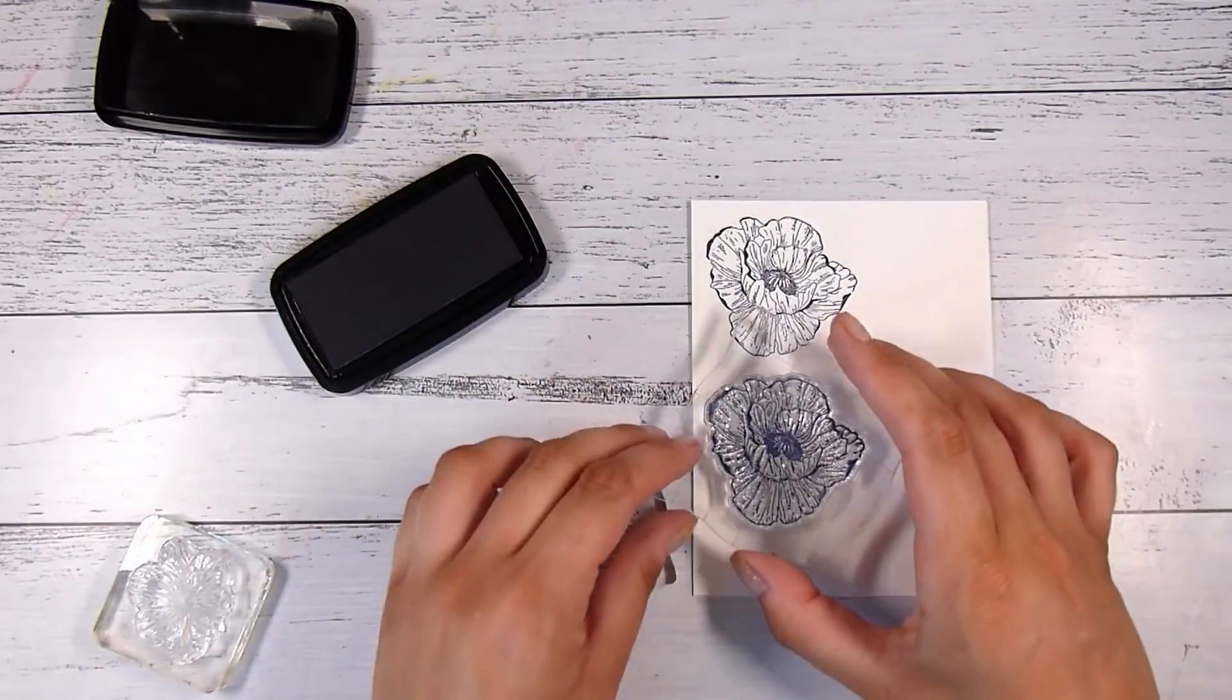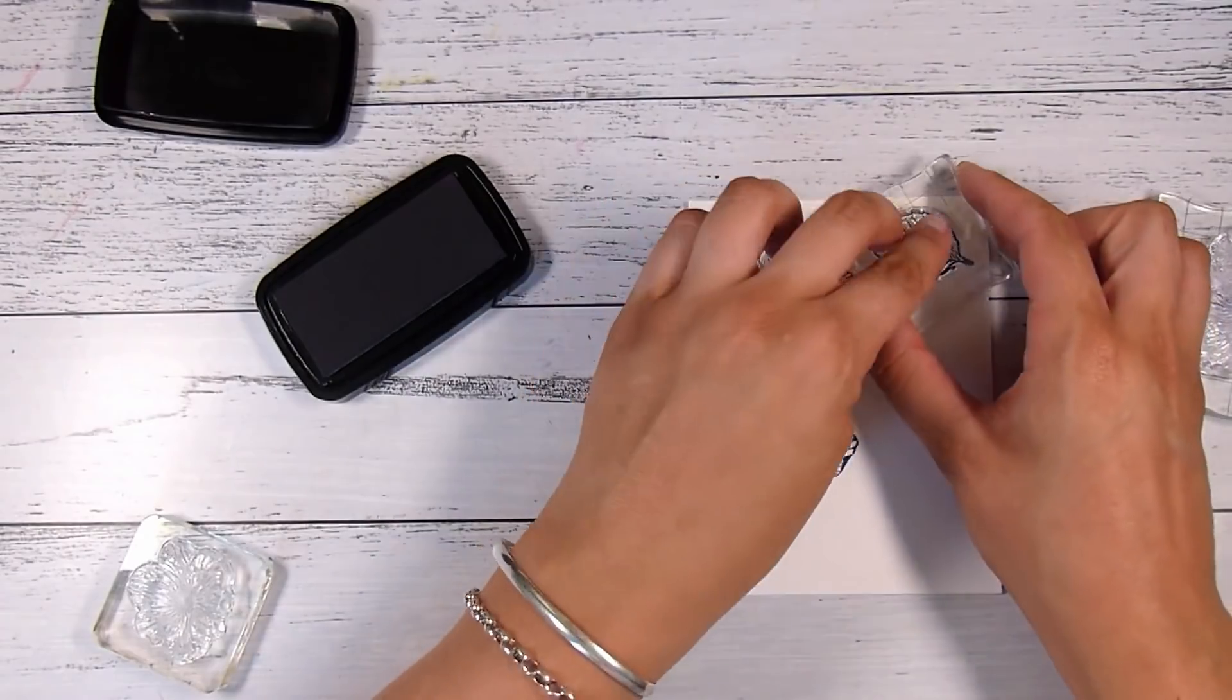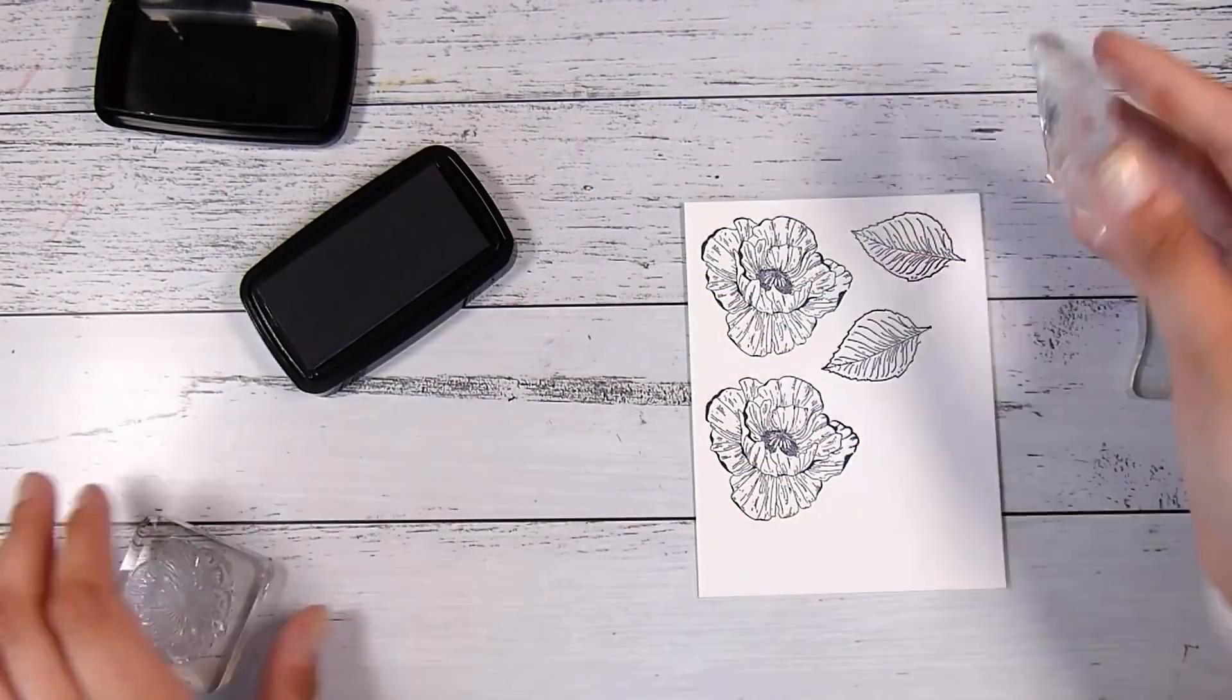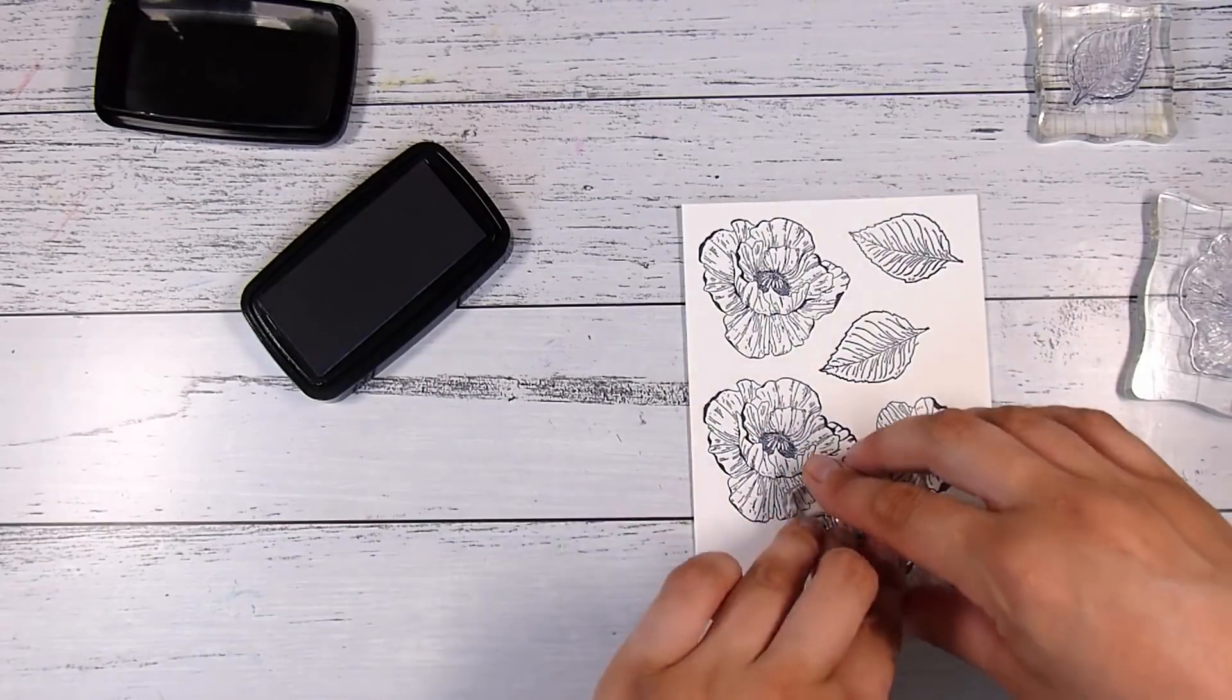I'm going to stamp out just using the exact same colors - the blue and then the black. I'm going to stamp out two of each: two smaller flowers, two larger flowers, and two of the leaves.